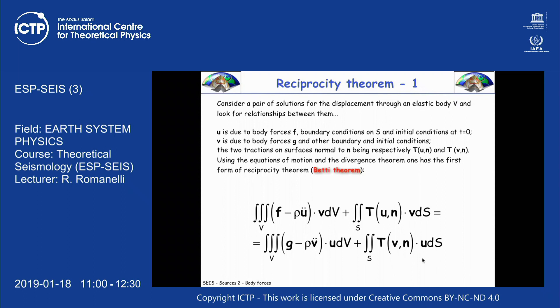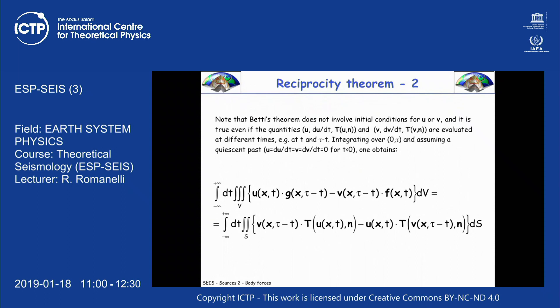We know how to make one step, and this staircase will take us to the step we want to make. That's the trick. This version of Betti's theorem is relating two solutions belonging to the same elastic body — the Earth. Now you understand that if we know V given G, we can use this expression to write U when F is much more complicated. And we can rewrite that expression in a shape that is more useful for us given the next slides.